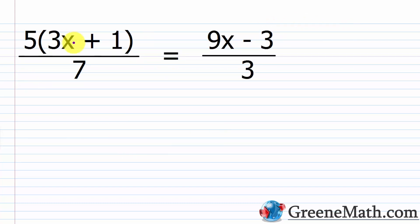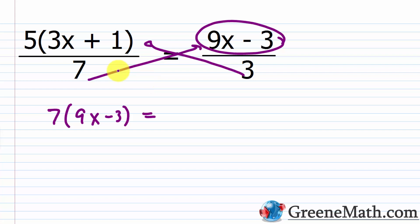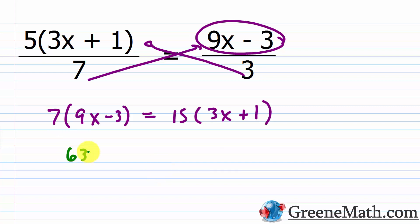Next: 5(3x+1)/7 = (9x-3)/3. Cross-multiplying, 7 multiplies (9x-3) and 3 multiplies 5(3x+1). It's easiest to multiply 3 by 5 first: that's 15, times (3x+1). On the left: 7 times 9x is 63x, minus 7 times 3 is 21.